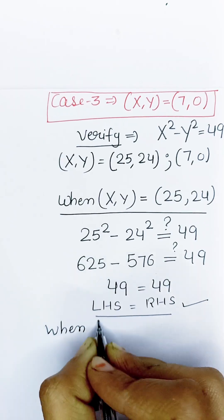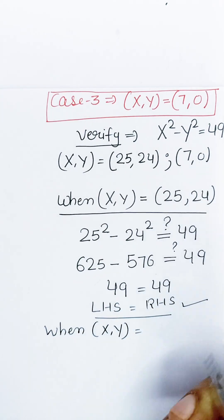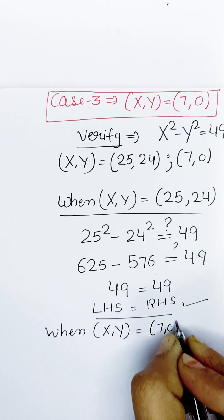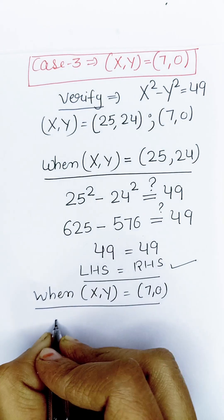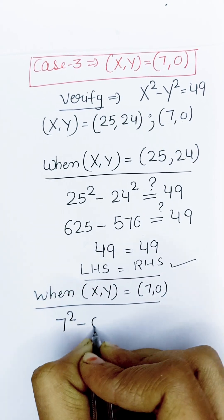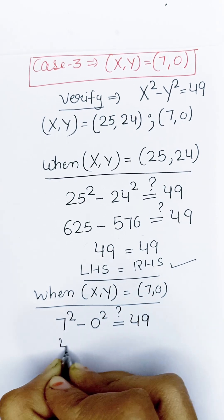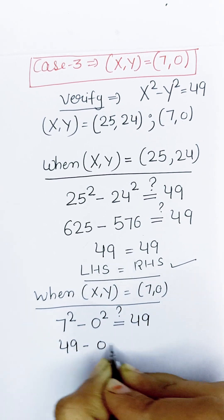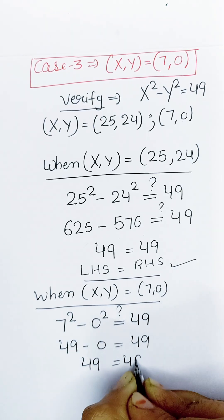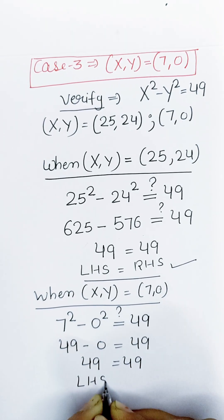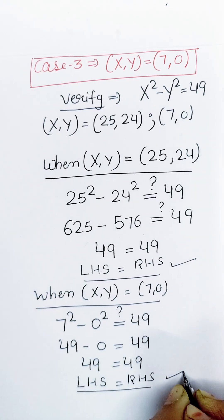Next, check when x equals 7 and y equals 0. Compute 7 squared minus 0 squared. 7 squared is 49 and 0 squared is 0, so we get 49 equals 49. Left-hand side equals right-hand side, so this is also a valid solution. Both solutions satisfy the original equation.